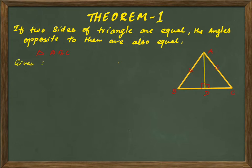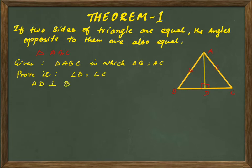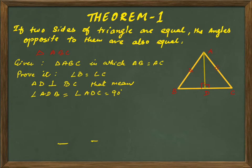What is given to us: in triangle ABC, AB equals AC. We have to prove that angle B equals angle C. To do this, we will draw AD perpendicular to BC from vertex A. So AD is perpendicular to BC, which means angle ADB equals angle ADC equals 90 degrees.